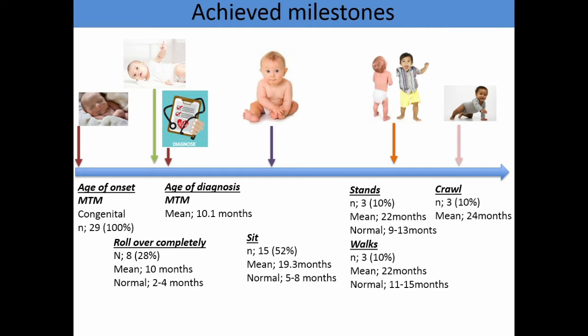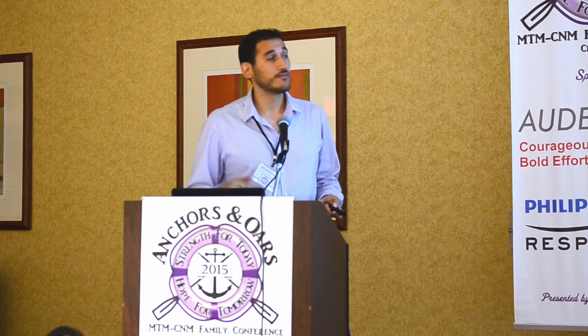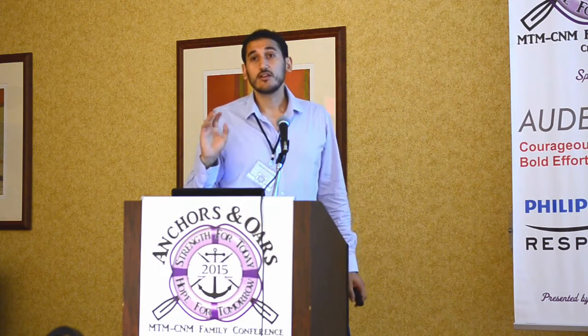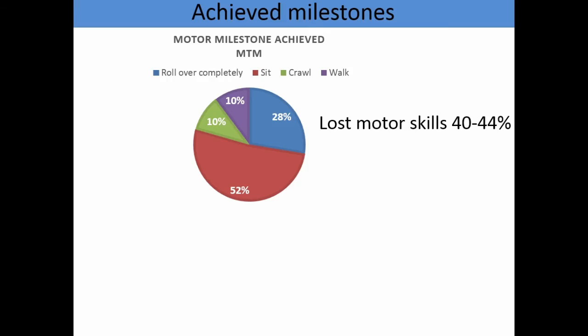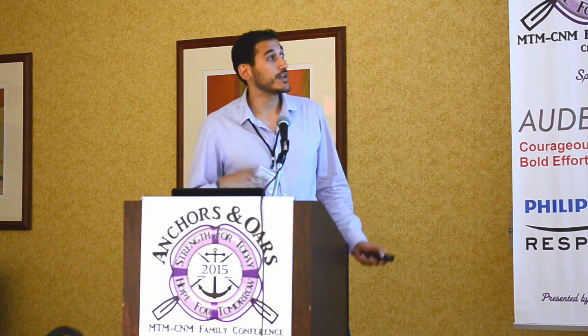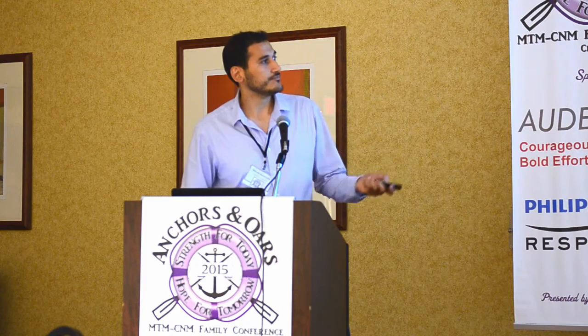In total, 52% of patients could sit by themselves, but there was a loss of motor skills in 40 to 44% of patients. This is really important, because it could be due to progression of the disease, but as we have seen, it is more related to secondary complications.